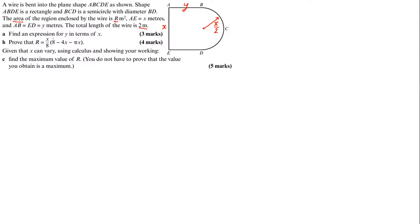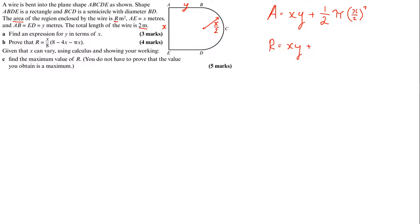It says find an expression for y in terms of x, so we need to substitute in. First, let's do our area. The area of the full shape is the area of a rectangle, which is x times y, plus the area of a semicircle, which is half pi r squared. That's half pi times (x/2) squared. So R equals xy plus — expanding this — pi x squared over 8. That's our formula for area.